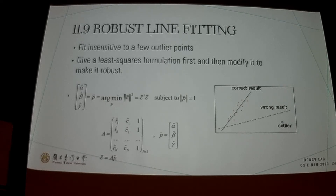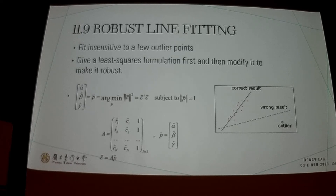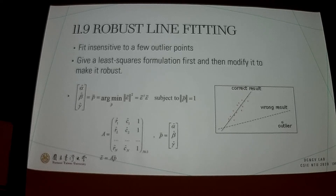The next part is robust line fitting. In robust line fitting, it is insensitive to a few outlier points. It first gives a least-square formulation and then modifies it to make it robust. We estimate the least-square formulation and then update or modify it until we achieve a more optimal parameter.